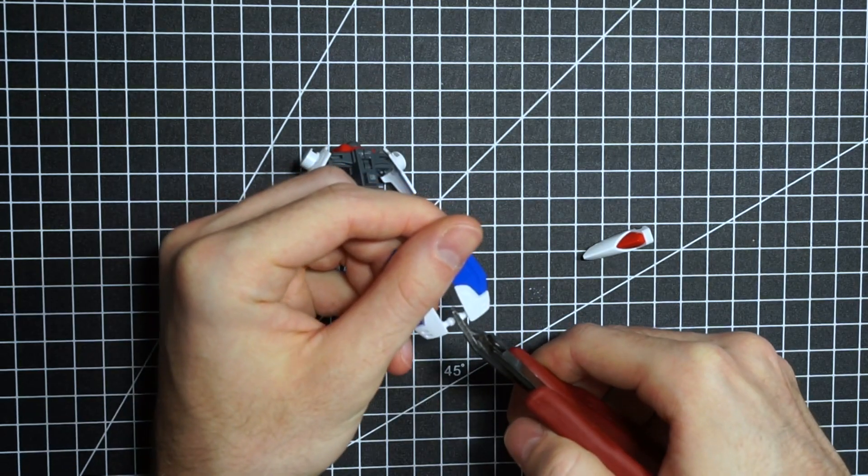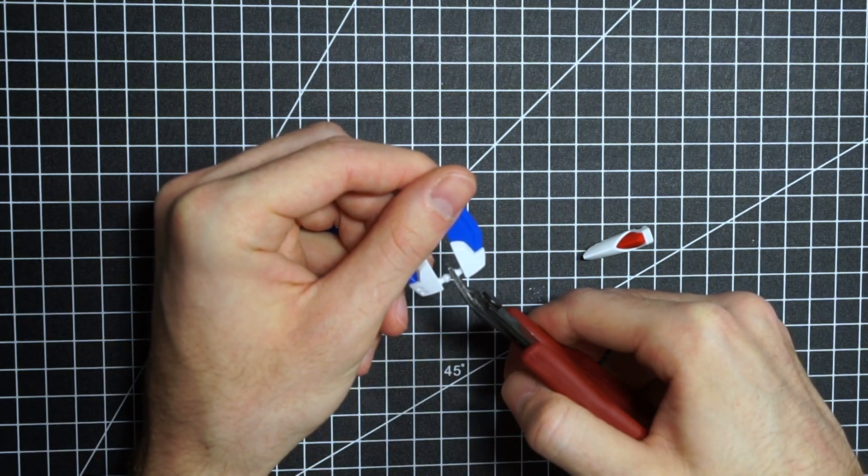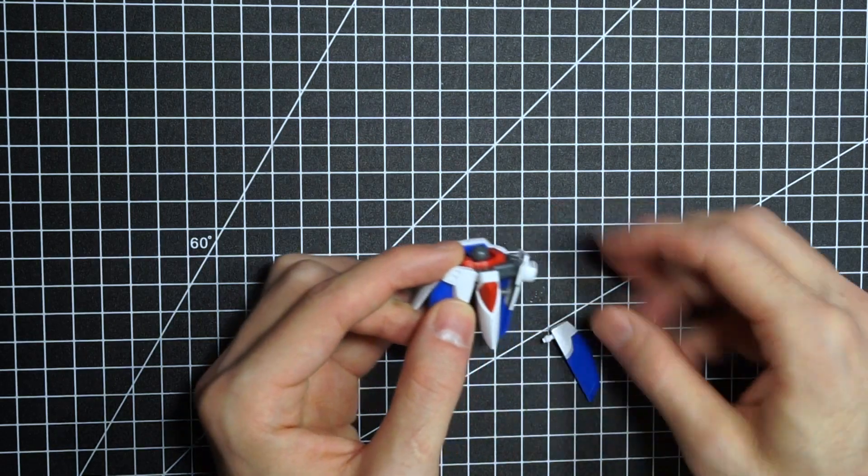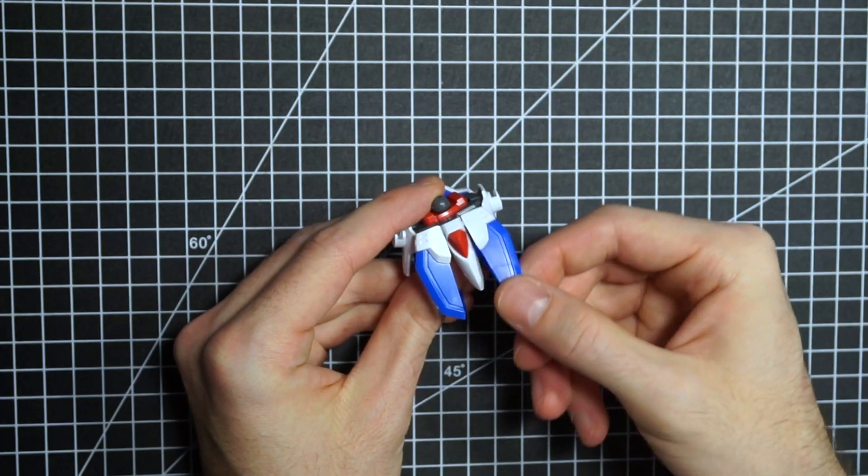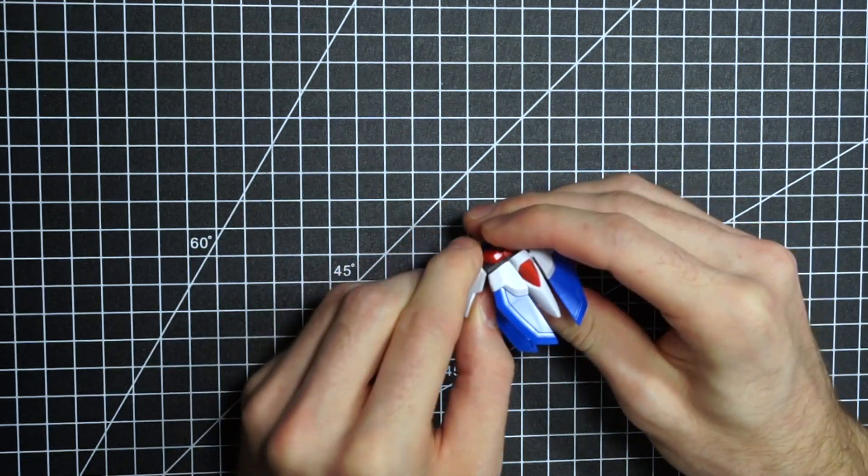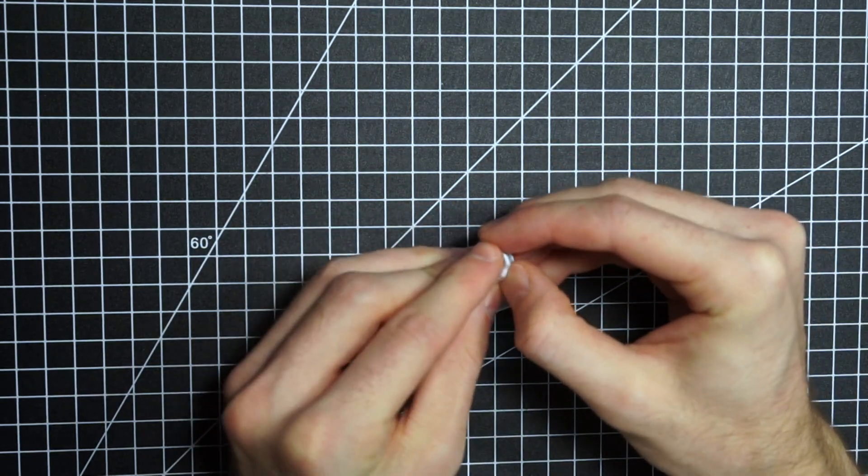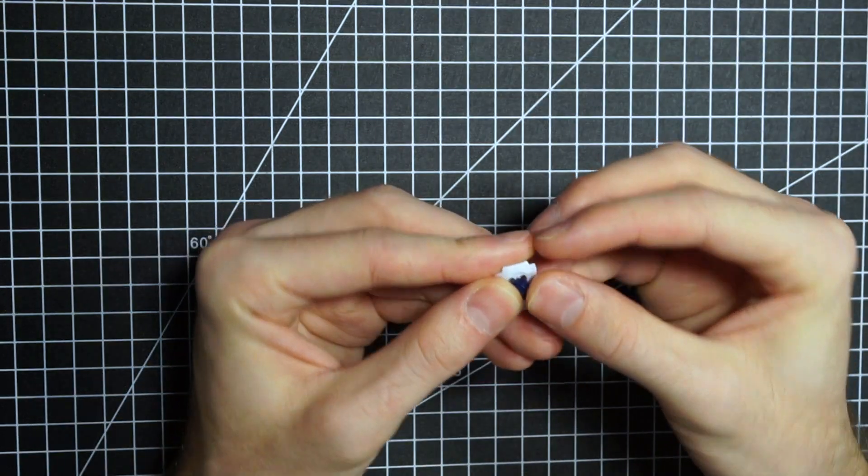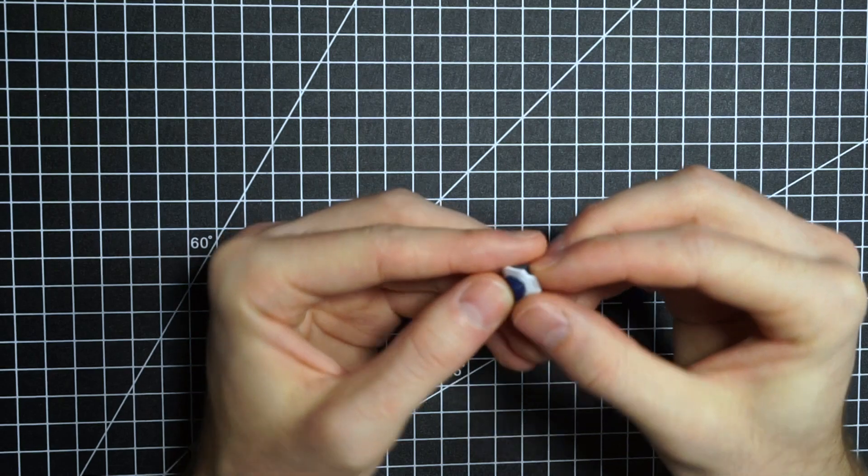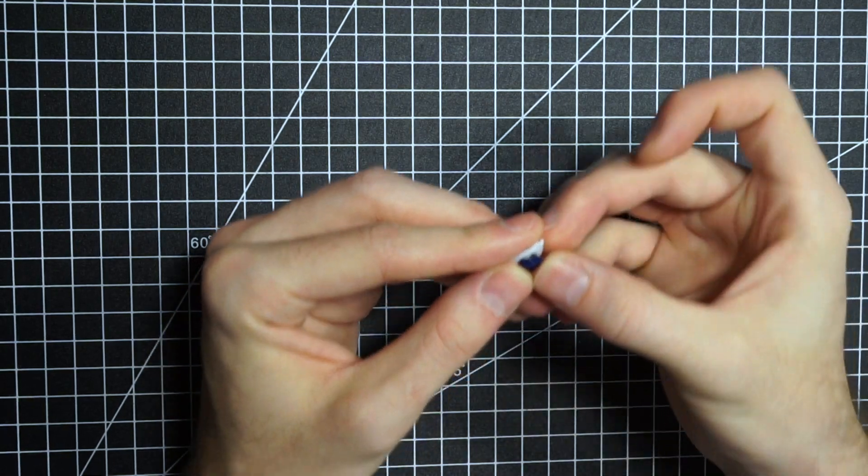I've never done it before, but it's really straightforward. You just split it in half, put it back together, and you're good to go. Next, for these side pieces on the waist unit, they have holsters for the handles of the beam sabers, but I'm not gonna use the beam sabers on this project, and I found the holsters a little distracting, so that's what these blue circle pieces are for.